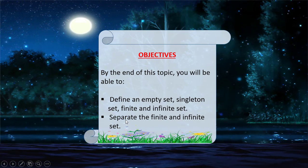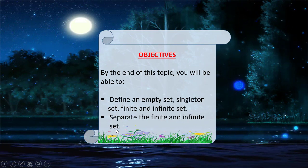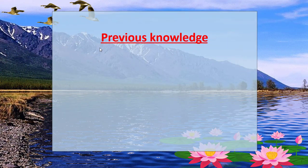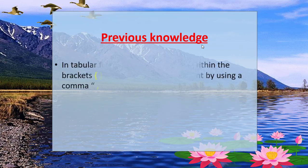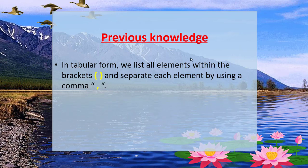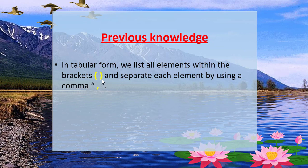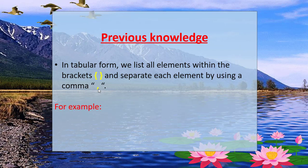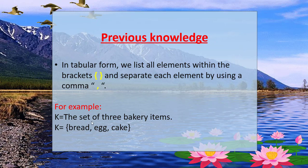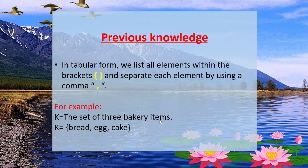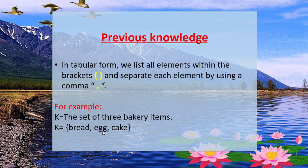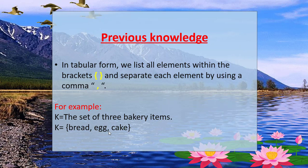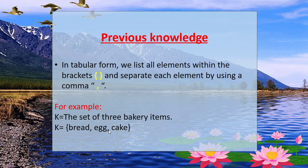You will also be able to separate finite and infinite sets. First, we recall previous knowledge. As you already know, in tabular form we list all elements within brackets and separate each element using a comma. For example, K is the set of three bakery items. In tabular form, you write your favorite three bakery items within brackets, separated by commas. The bakery items are bread, egg, and cake.